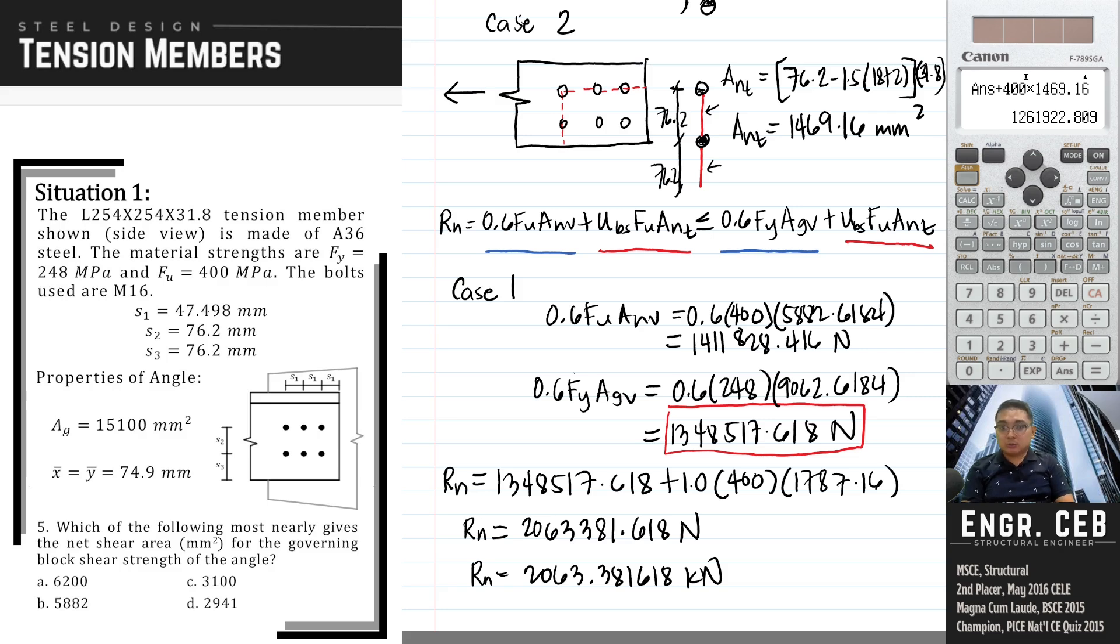We forgot to multiply 76.2 by 2. So let us multiply this by 2. Our ANT for case 2 becomes 3892.32.